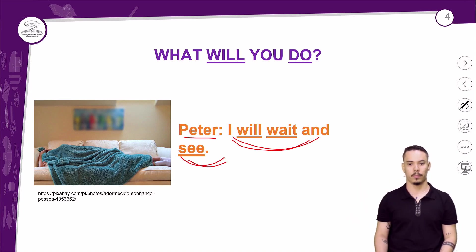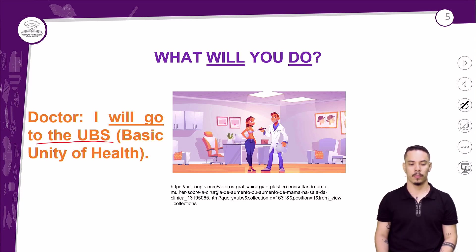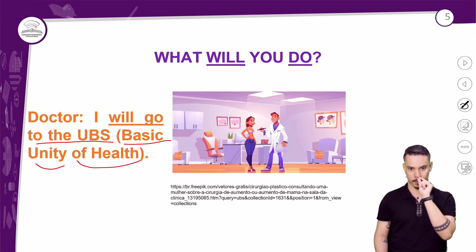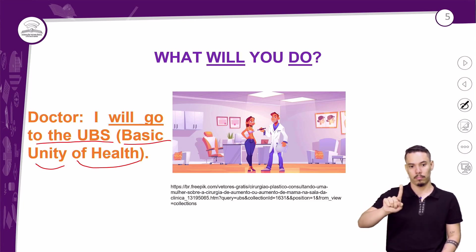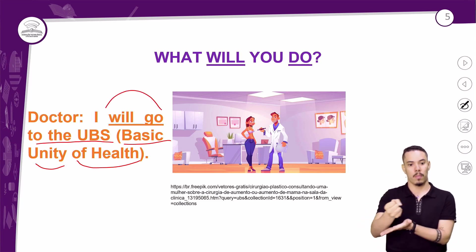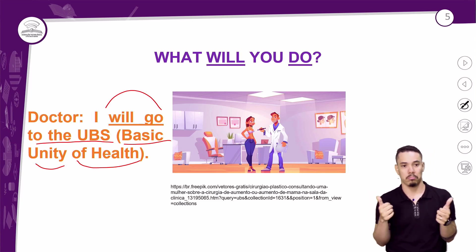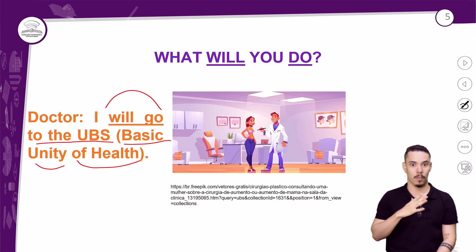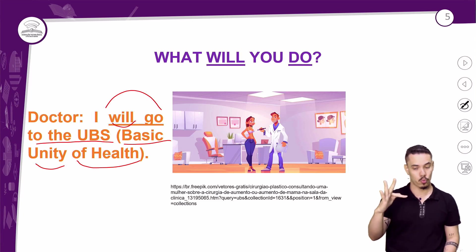The doctor is asked 'What will you do?' and replies: 'I will go to the UBS' — eu irei para a Unidade Básica de Saúde. So 'I will go' means 'eu irei.' You can also say 'eu vou,' that's fine too — you choose. Then the question 'Will you eat something first?' — Você comerá algo primeiro? This is a yes-or-no question, starting directly with 'will.'